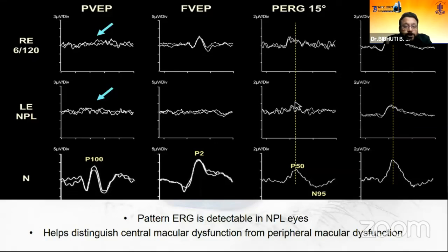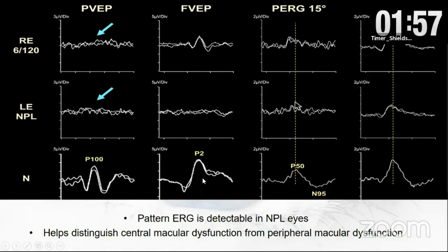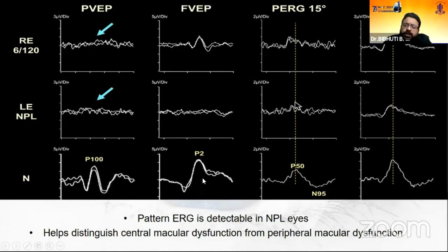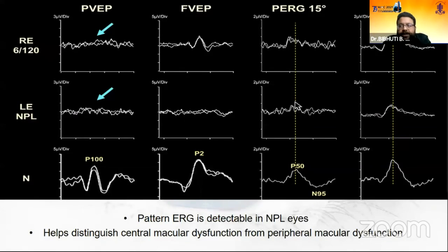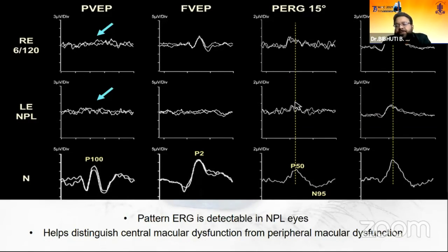Pattern ERG also helps distinguish central macular dysfunction from peripheral macular dysfunction. If we increase the recording field from 15 to 30 degrees and the P50 attributes improve, we can confirm that the poor P50 was originating from the central 15 degrees, which was compensated by the more peripheral 15 degrees of the macula. This allows us to distinguish between central and peripheral macular dysfunction.